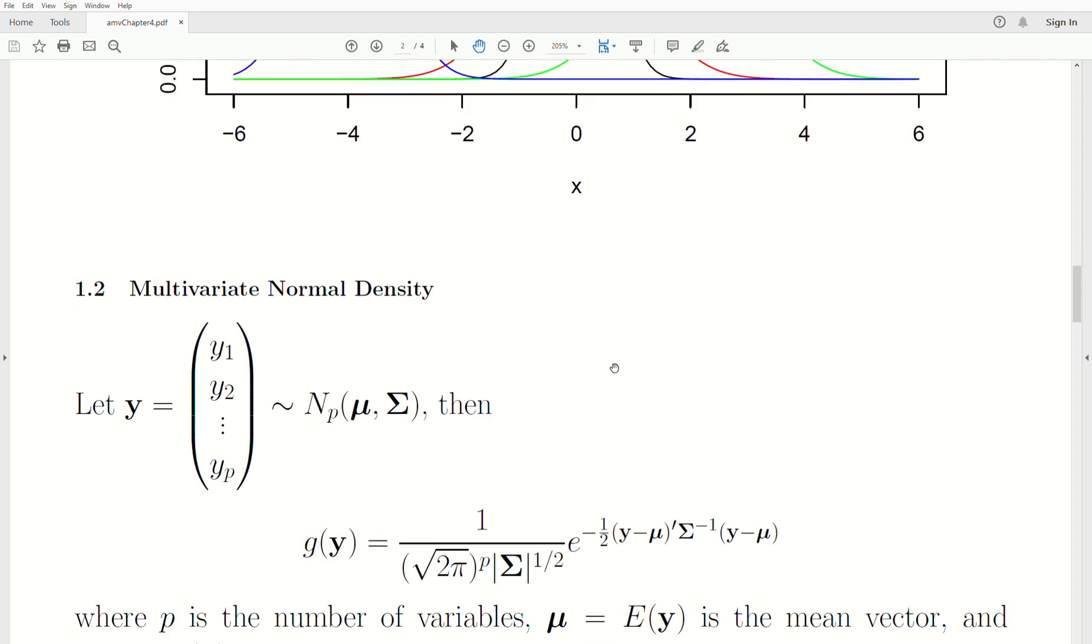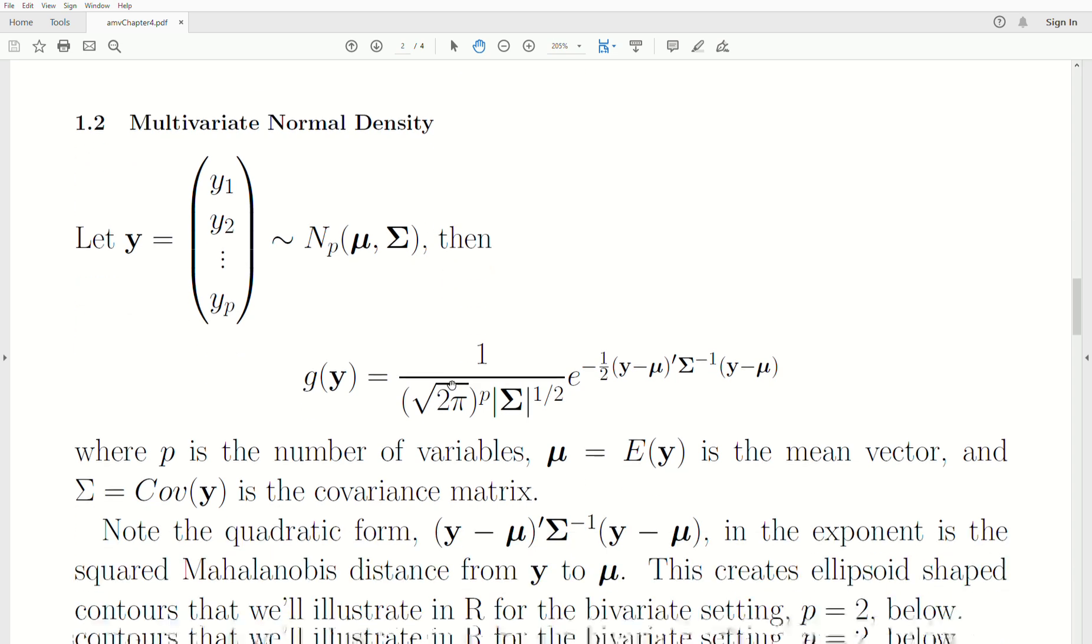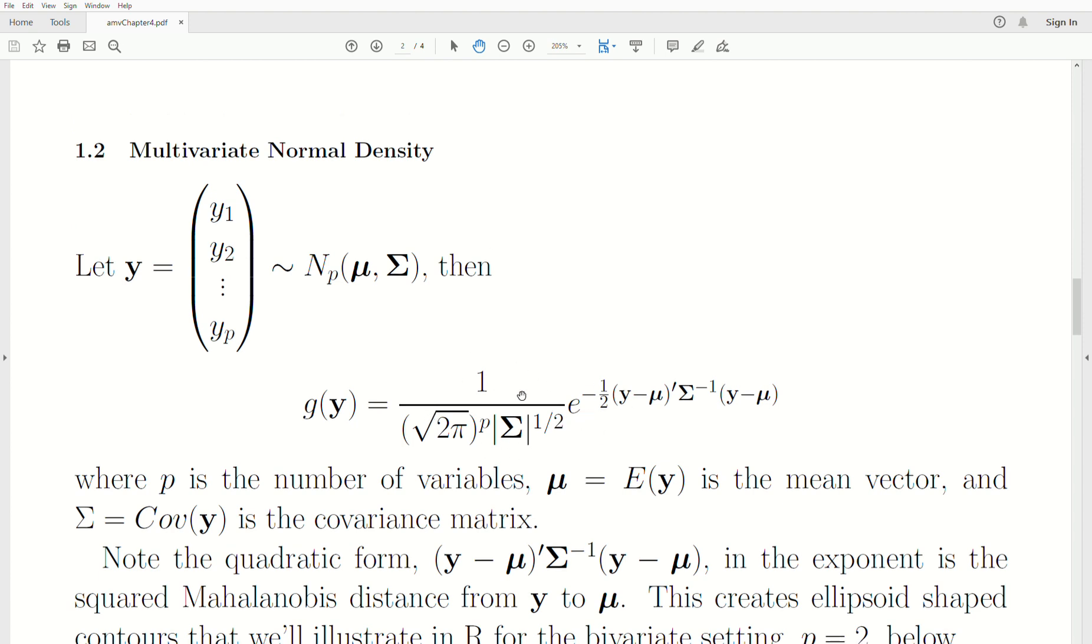Now, the multivariate normal density, we say Y is distributed as multivariate normal, dimension p, mean vector mu, and covariance matrix sigma. Now, some just call it a covariance matrix, so either is fine. And if we look at the density, it's actually very similar. We have these constants out front, which are called normalizing constants, which makes the area under this curve integrate to one. We have E raised to the minus one-half times this quadratic form. P is, of course, the number of variables that we collect on each unit, or the dimensions of the vector. Mu is the mean vector. Sigma is the covariance matrix.